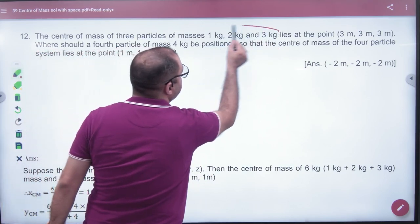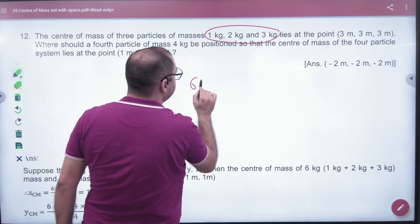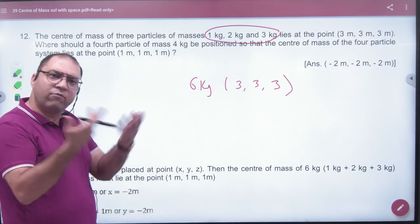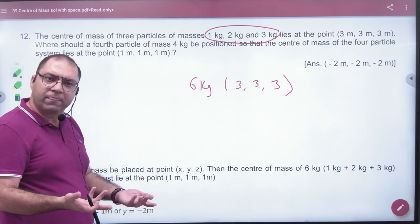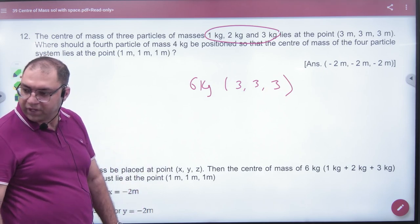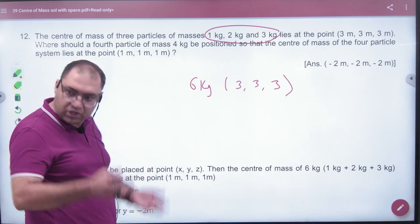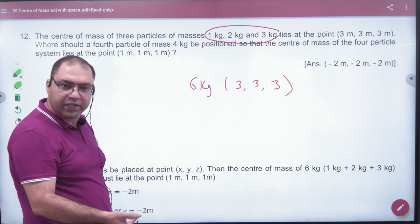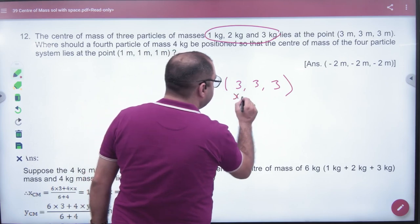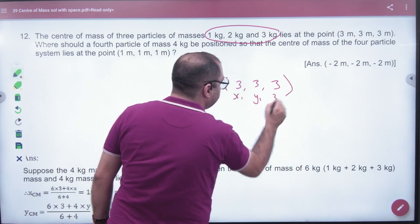Why not do this? We assume that 3 plus 2 plus 1 is how many kg? The coordinate of 6 kg is 3,3,3. Take one body and its center of mass is given. So, one body is 6 kg and its coordinate is given. Did you assume that?